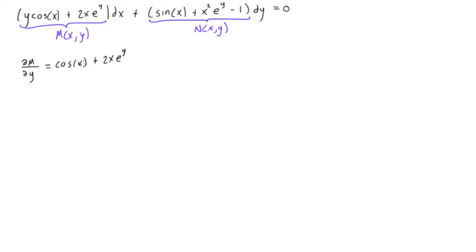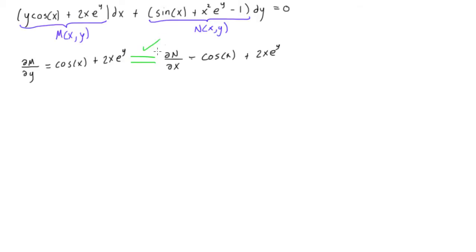Now let's check ∂N/∂x, the partial derivative. The partial derivative of sine of x with respect to x is just cos of x. And here we get plus — the 2 will come down — so we get 2x e to the y. E to the y remains as a constant, and the minus 1 just goes to 0. So we have cos x plus 2x e to the y on both sides — hey, look at that! This is an exact differential equation.